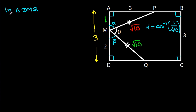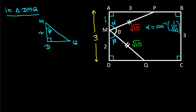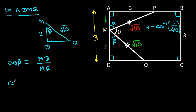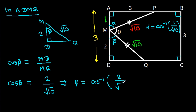In triangle DMQ, the angle at D is beta, the angle at D is 90 degrees, MD is 2, and MQ is root 10. So cos beta equals base MD over hypotenuse MQ, which is 2 over root 10. Therefore beta is cos inverse of 2 over root 10.